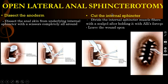Then the next step is you have to cut the internal sphincter. You can divide the internal sphincter muscle fibers with a scalpel after holding the internal sphincter with Allis forceps. Then you can leave the wound open — you need not suture it; automatically by itself it will heal. But while you are cutting, you have to be very careful. You have to cut only the internal sphincter and not the external sphincter. The internal sphincter will be relatively white in color — that you have to cut.